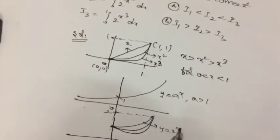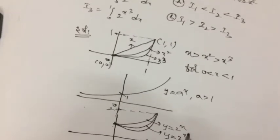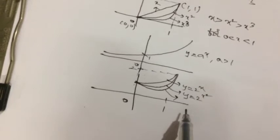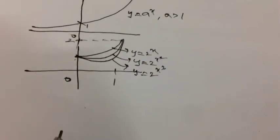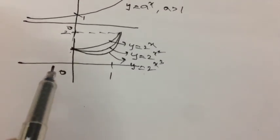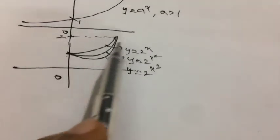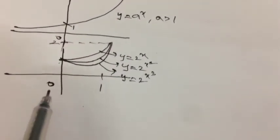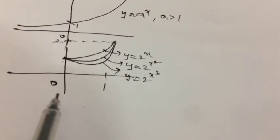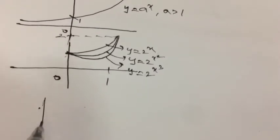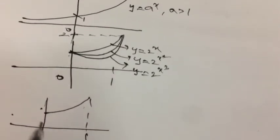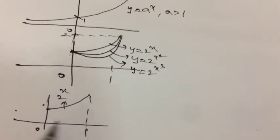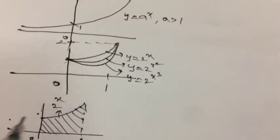So the first one is y equal to 2^x. This is y equal to 2^(x²). The third one is y equal to 2^(x³). So if you see integral 0 to 1, I₁ value is higher, right? Because I₁ is nothing but integral 0 to 1, 2^x dx. So 2^x dx, the value is nothing but the integral which is bounded between 0 to 1, right? So with respect to x axis, you are integrating it. So if you see here, 0 to 1, 2^x. So this is the value which 2^x will get.